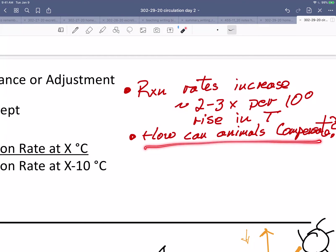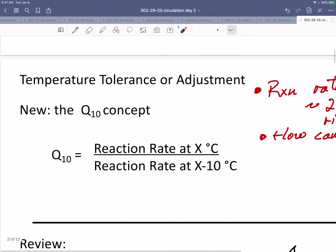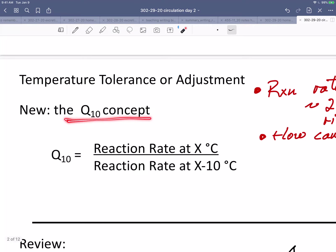So how can animals compensate? If your reactions are twice as fast, then you're producing twice as much of your metabolites. You're using energy twice as fast, and you may not have that energy. So how do you adjust to have the same level of activity with a change in temperature? Animals clearly do it. This is called the Q10 concept.